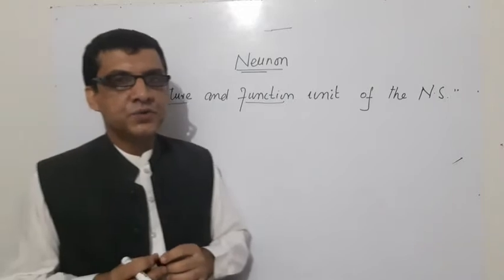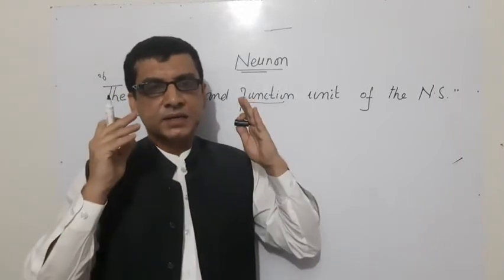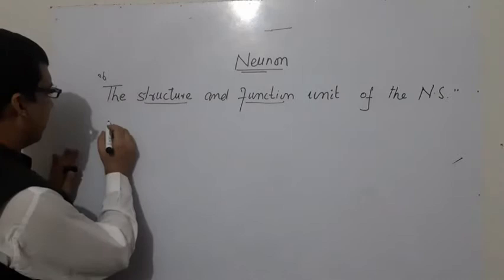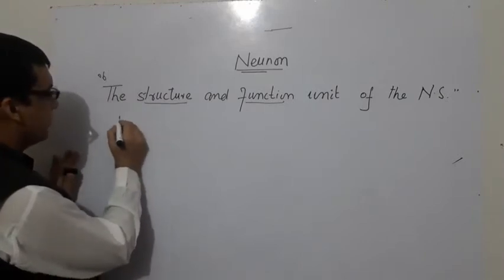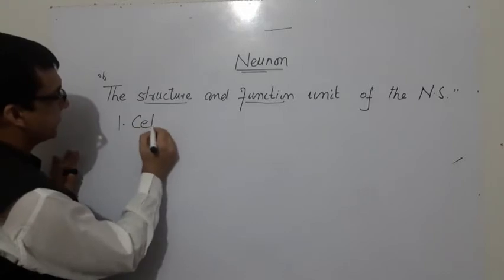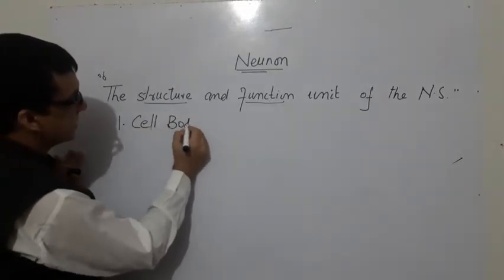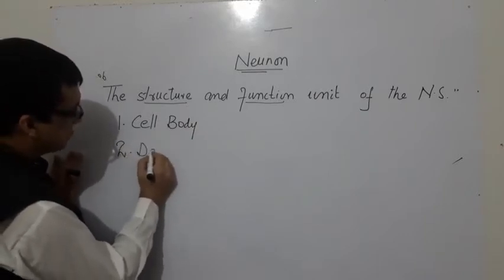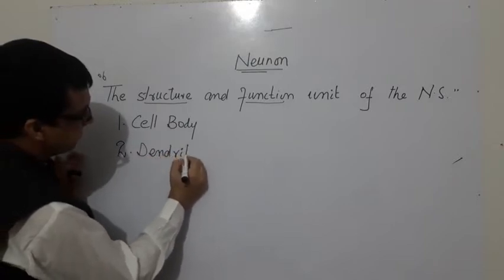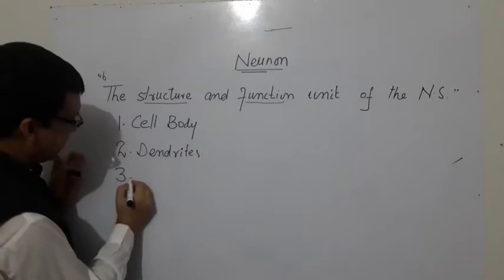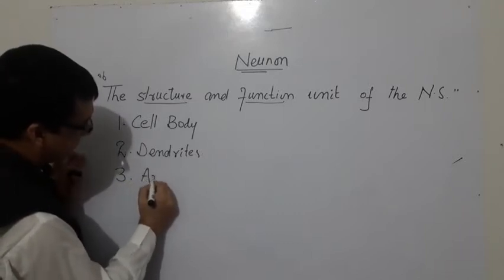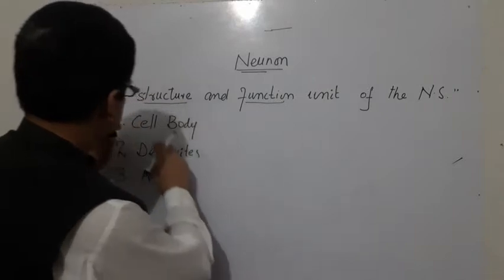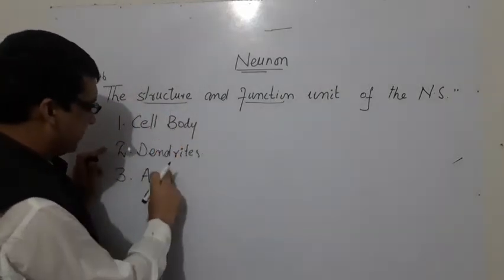Now we are going to discuss the structure of a typical neuron. A typical neuron cell consists of three parts: number one is called the cell body, number two is called dendrites, and number three is called the axon.